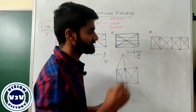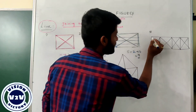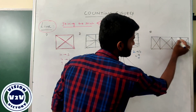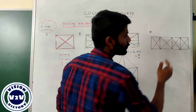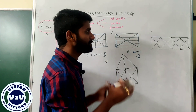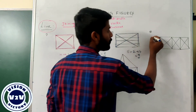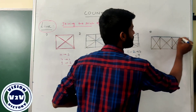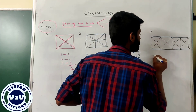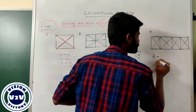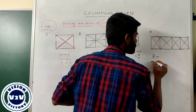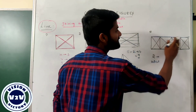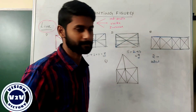Some students count like: this is one line, this is two lines, this is three lines, this is four lines — that is completely wrong. Line means joining of two points, so the number of horizontal lines for this figure is only two. We do not consider individual boxes separately.